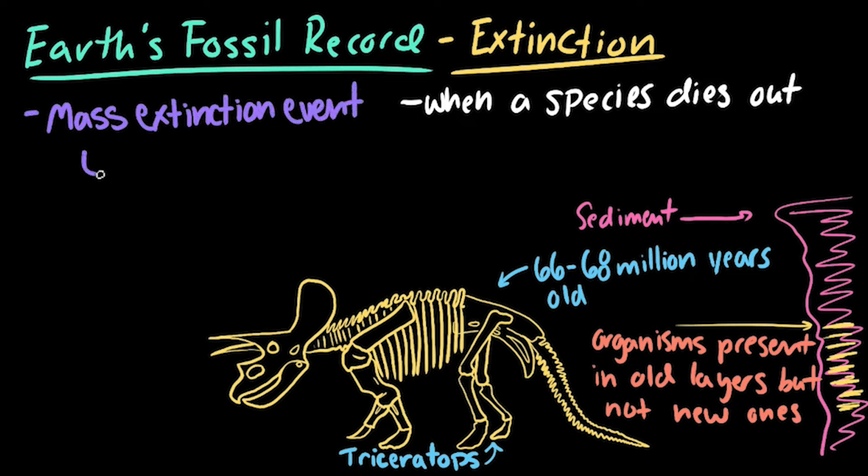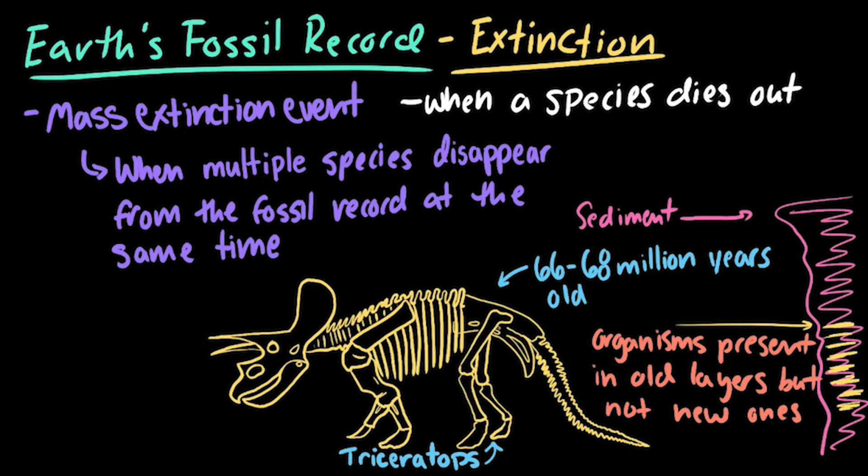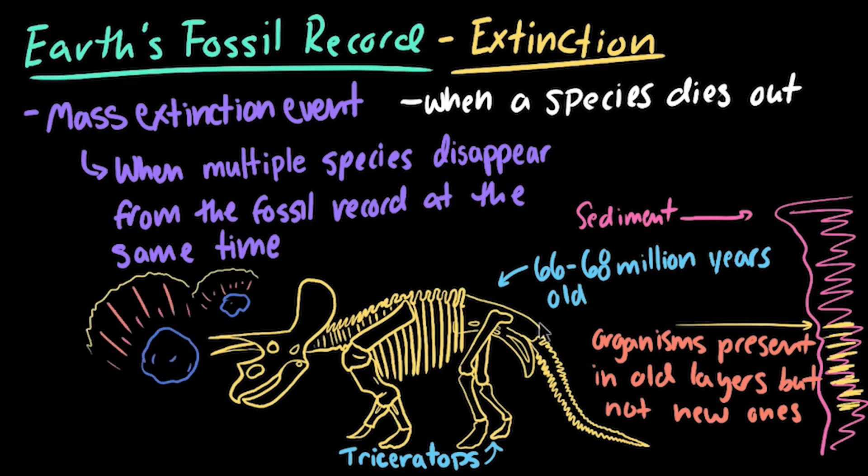Mass extinction events happened when large-scale environmental change caused many groups of organisms to go extinct around the same time. When we see the Triceratops disappear from the fossil record, we also see other types of organisms disappear too, providing evidence for the mass extinction event that led to the disappearance of all non-avian dinosaurs.